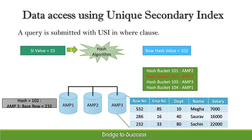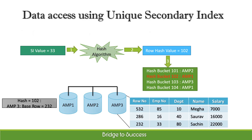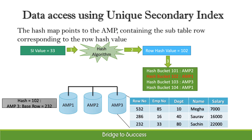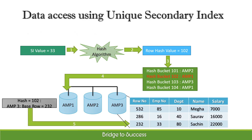We submit a query with employee number equals 33 in the WHERE clause. The hashing algorithm calculates a row hash value — let's assume the value is 102. The hash map points to the AMP containing the subtable row corresponding to the row hash value; here the subtable is in AMP1. The subtable indicates where the base record resides — the record is in row 232 of AMP3. The message goes back over the BYNET to the AMP with the row, and the AMP accesses the data row in AMP3. The row is sent over the BYNET to the PE, and the PE sends the answer set on to the client application.